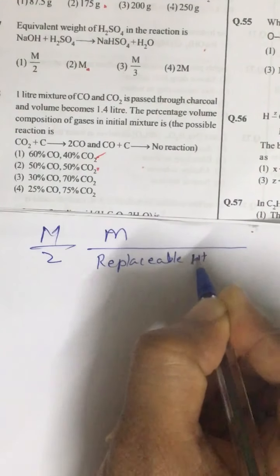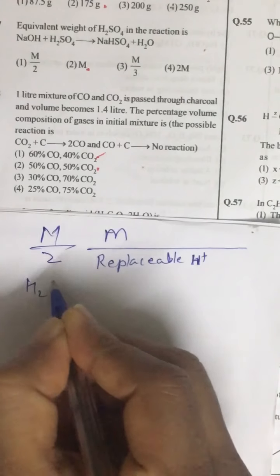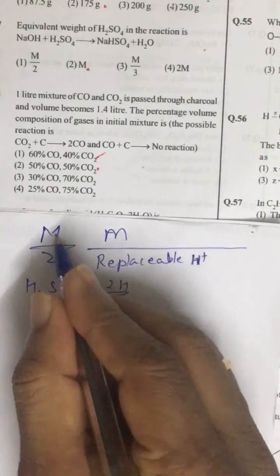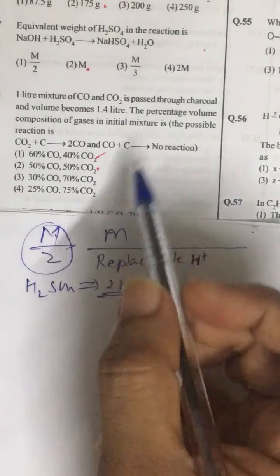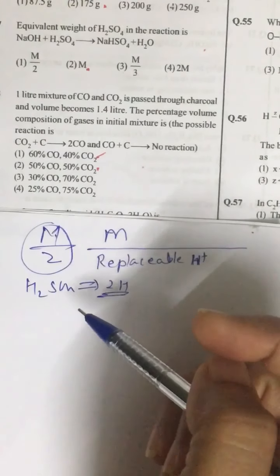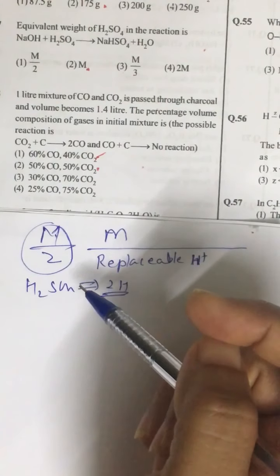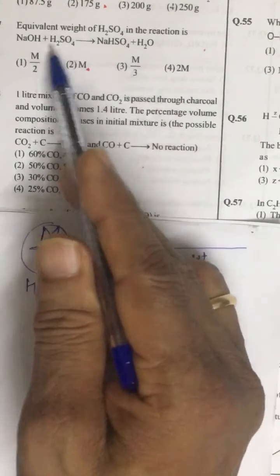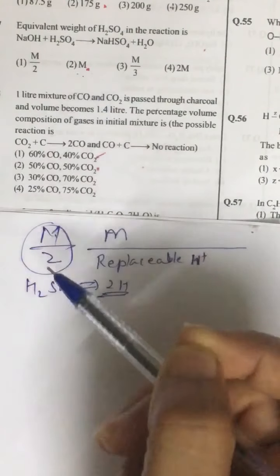So normally in H2SO4, we have two hydrogen which can be substituted. So M by 2. But if our reaction is given, we have to follow that reaction. So you have to tell how many H positive you are actually substituted. So only one hydrogen. So it is M by 1.